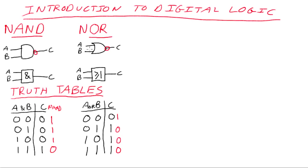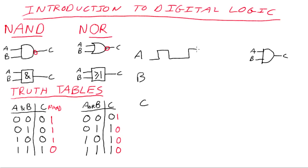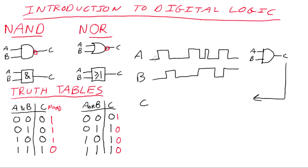Let's actually look at a timing diagram, because you're probably familiar with the oscilloscope displaying voltage versus time. Well, we're just going to look at logic level versus time. Let's take, for example, the AND gate. We've got A, B, and C as our output. I'm going to draw some signals in here completely randomly and we'll see what we actually get out.